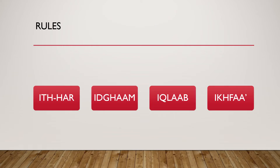The next point: when the author says there are four rules, this means that when a noon sakinah or tanween comes before any one of the remaining letters of the Arabic alphabet, four rules emerge from this meeting. According to the ulama of Tajweed and Qira'at, there are four rules: the first is Al-Izhar, the second is Al-Idgham, the third is Al-Iqlab, and the fourth is Al-Ikhfa, which we will take in detail now.